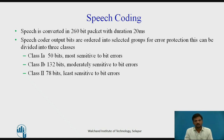Speech coder output bits are ordered into selected groups. For error protection, bits can be divided into 3 classes based on importance. Class 1a includes 50 bits, most sensitive to bit errors. Class 1b includes 132 bits, moderately sensitive to bit errors. Class 2 includes 78 bits, least sensitive to bit errors.